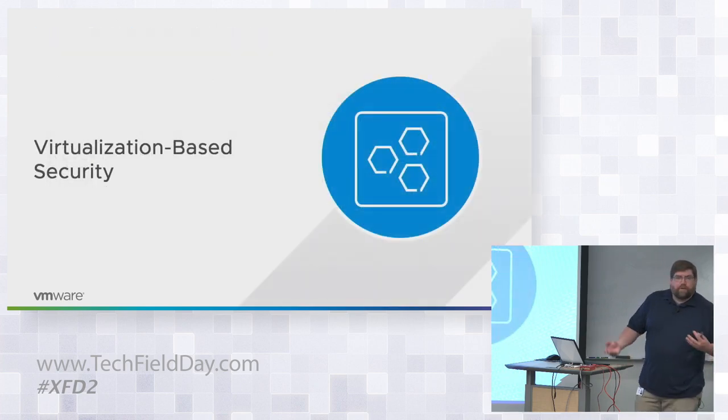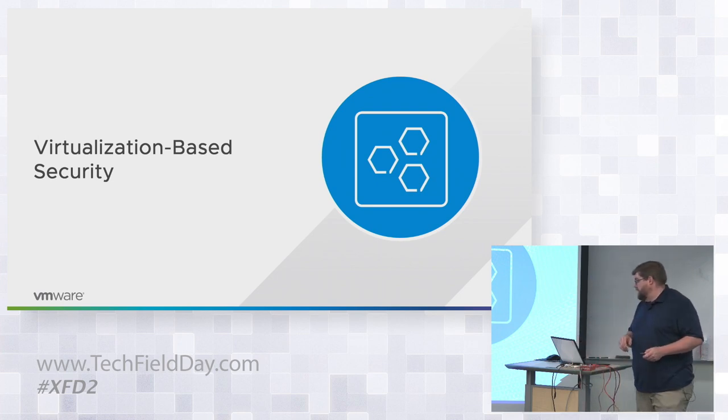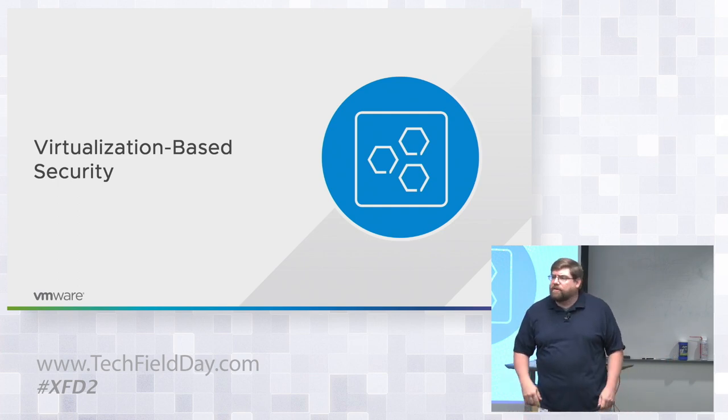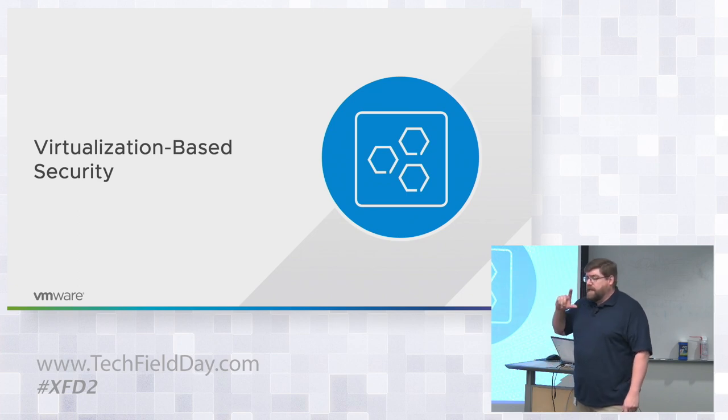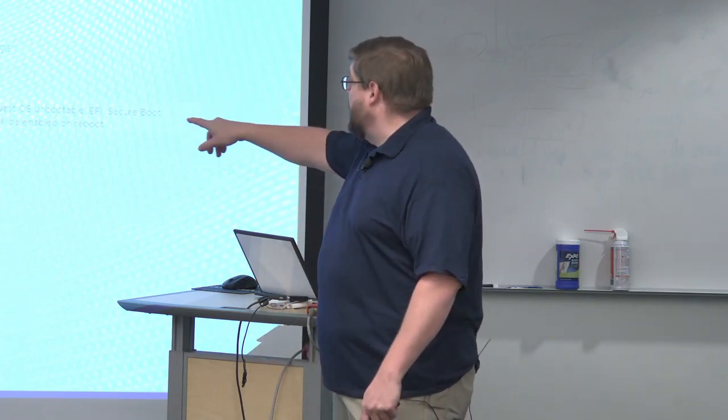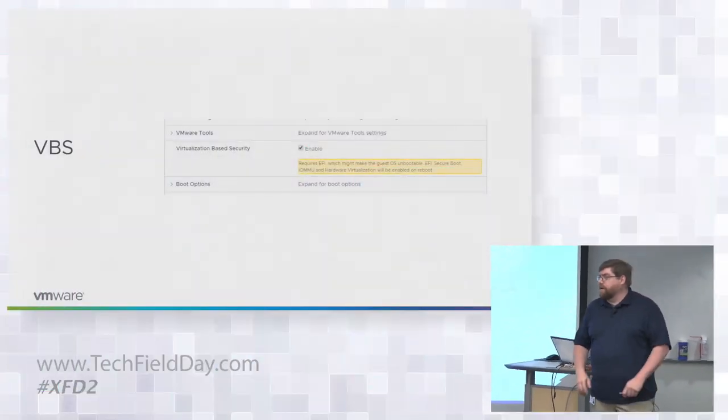Virtualization Based Security — VBS uses a little bit of Hyper-V. This is a Microsoft concept — device guard, credential guard, sometimes called HVCI (hypervisor code integrity). It's basically nested virtualization that enables a memory space Windows uses to securely store credentials. This really effectively ends a lot of pass-the-hash attacks and credential attacks. Microsoft recommends turning it on early in your build process so credentials get stored in there and cryptographic material is secured. IOMMU, hardware virtualization, EFI, and secure boot will all be turned on if you're not using them already.